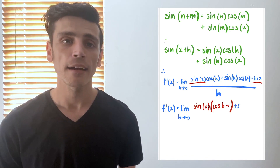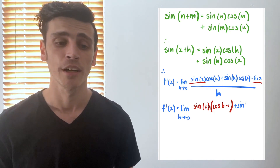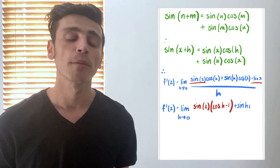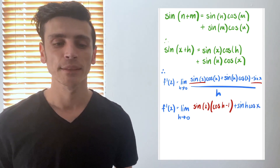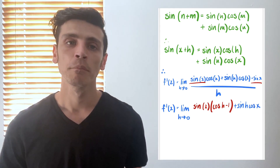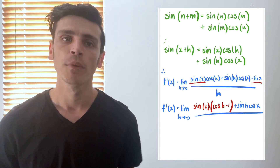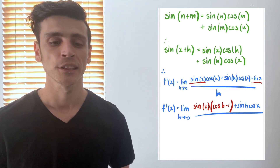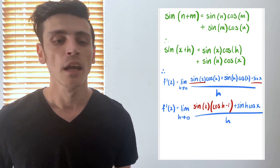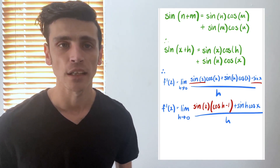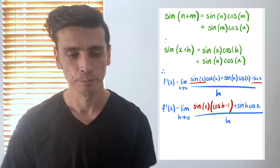Putting our like terms together — our sine(x) terms — the expression becomes: the limit as h approaches 0 of sine(x) multiplied by the bracket (cos(h) minus 1), closed bracket, plus sine(h)·cos(x), all divided by h. Note that the sine(h)·cos(x) term doesn't have a sine(x) in it, so that stays as its own entity for now.